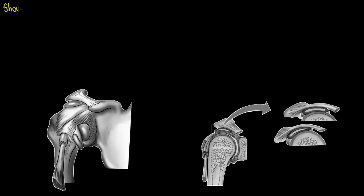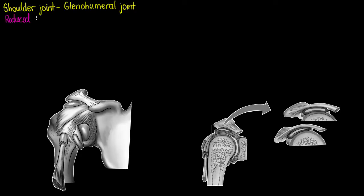Welcome to this tutorial on the shoulder joint, otherwise known as our glenohumeral joint. We have already focused on the complexity of the knee joint in a previous video, but with the shoulder we sacrifice a lot of that complexity to give ourselves the most freely movable joint in our body. So it has reduced complexity but the highest range of motion.